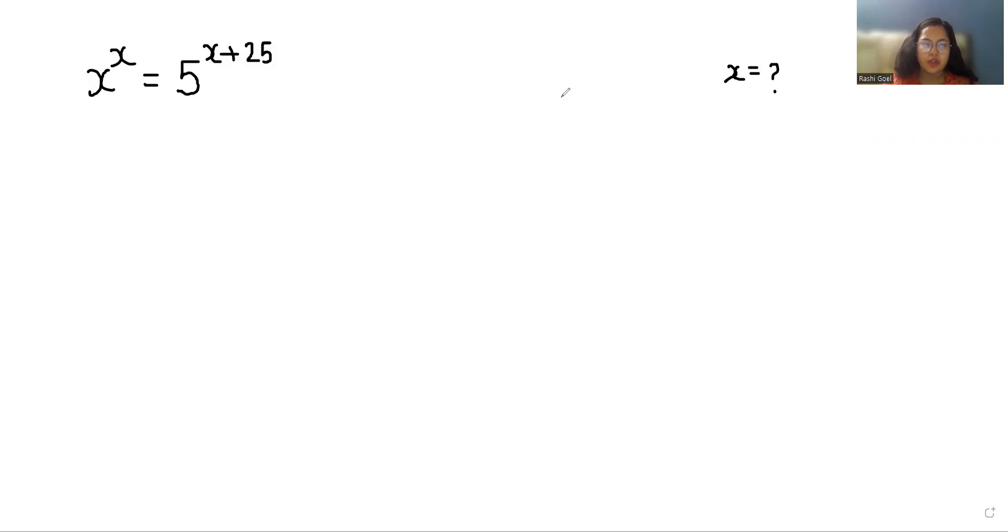So let's start with today's video solution. According to exponent rule x power m plus n, we can write it as x power m times x power n. So x power x is equals to 5 power x times 5 power 25.